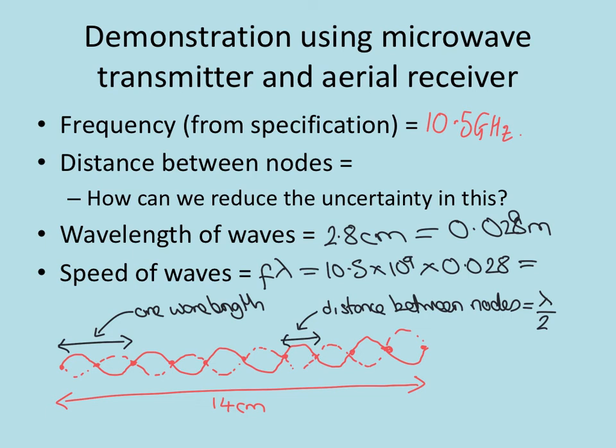Hopefully you also thought about what I did to reduce the uncertainty in my measurement and the key thing there was that I measured from the 0th to the 10th node so that I could get a distance which was actually five wavelengths and then my uncertainty in measuring that distance will get divided by five when I actually work out for one wavelength so I will have reduced the uncertainty considerably by doing that compared to measuring the distance from one node to the next one.